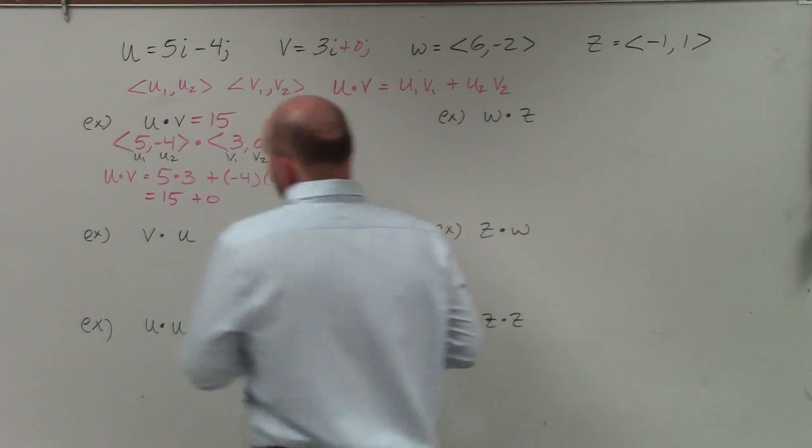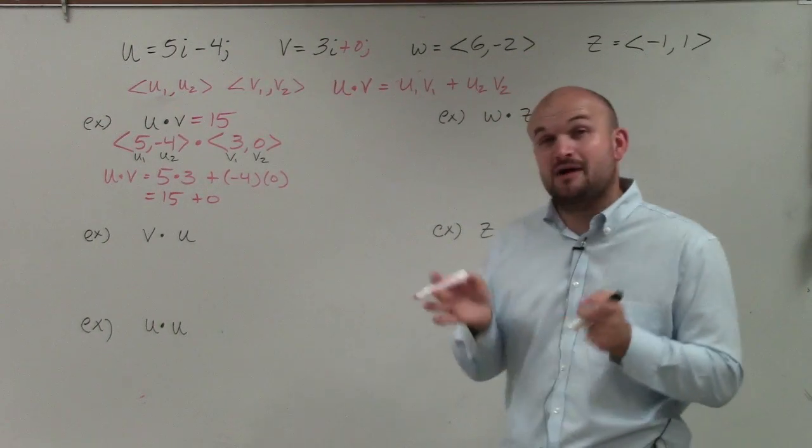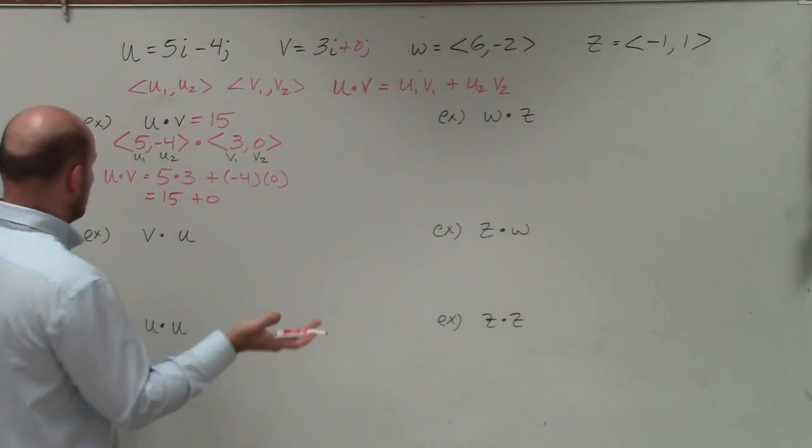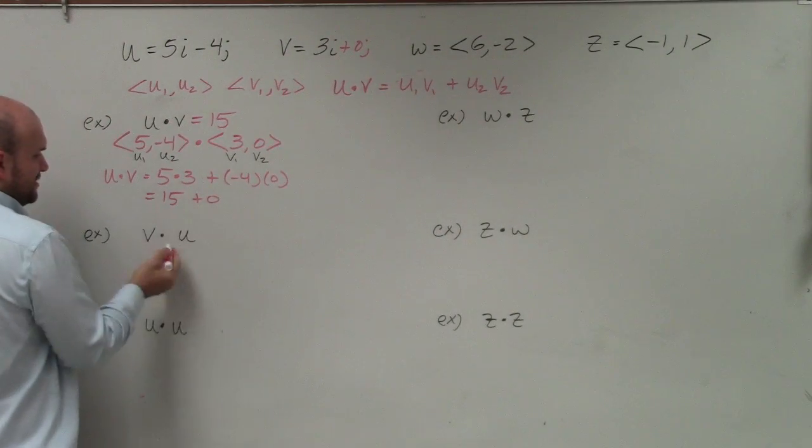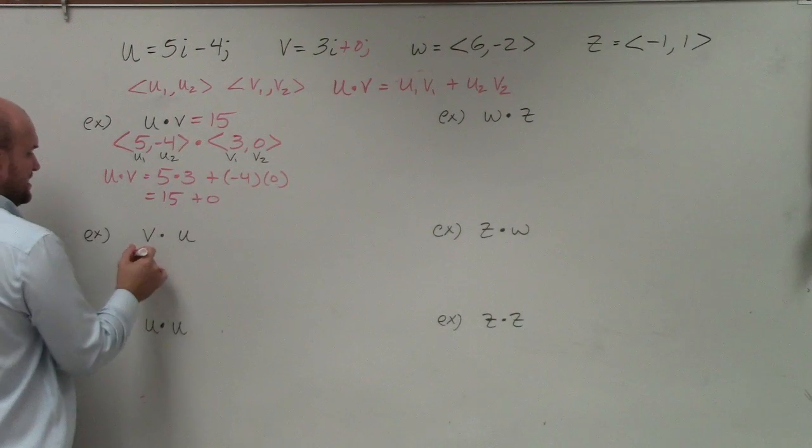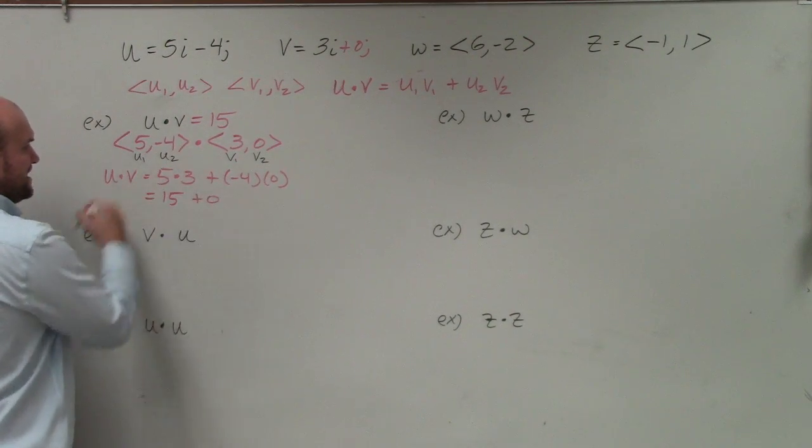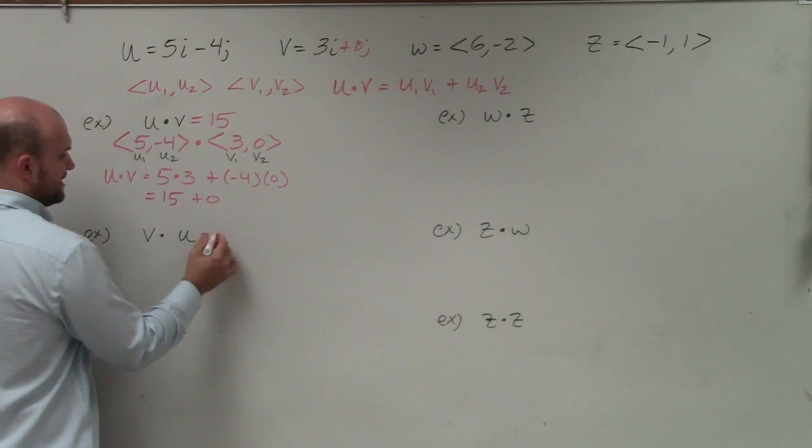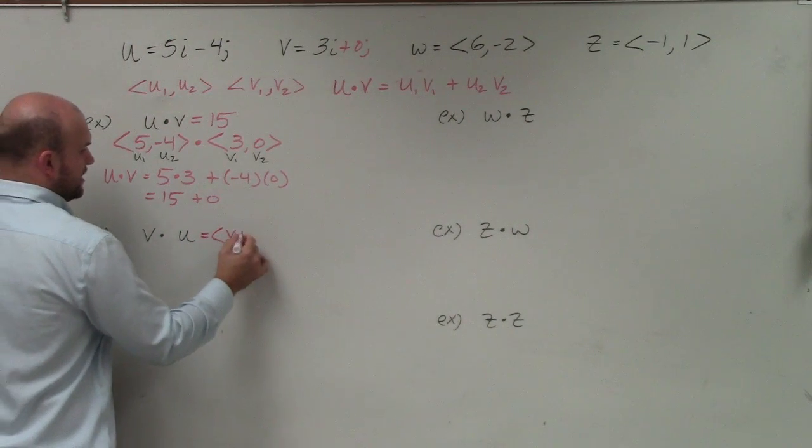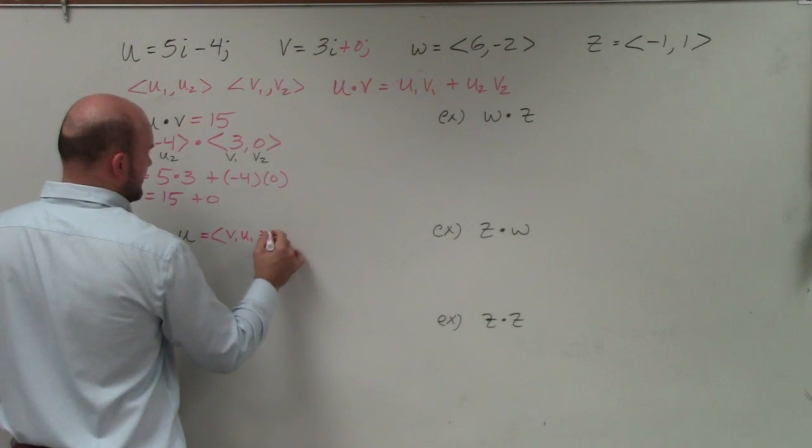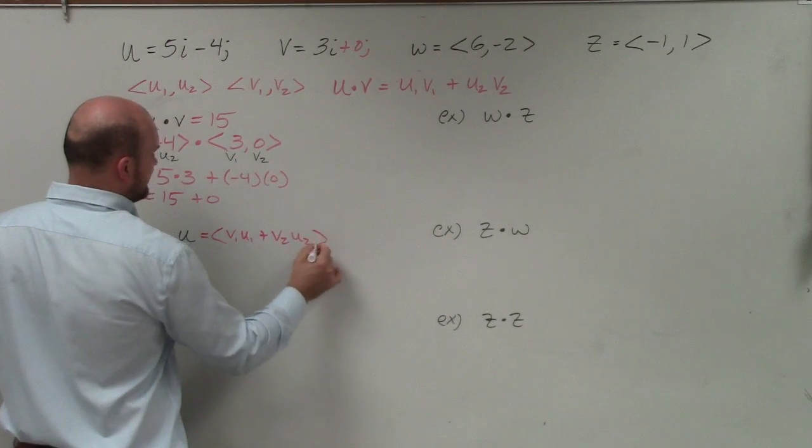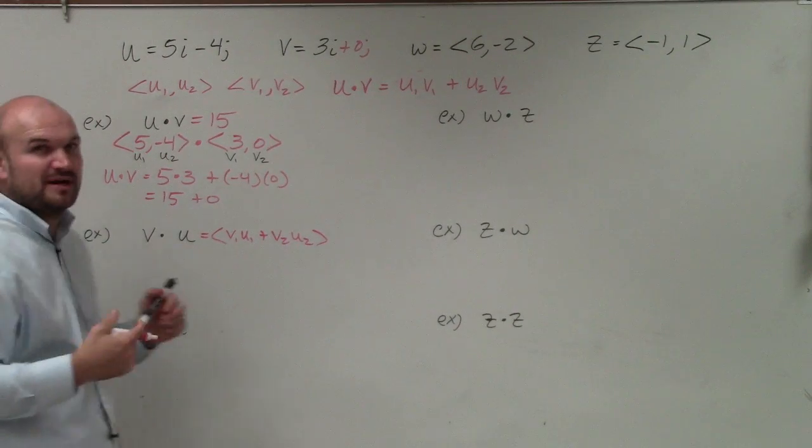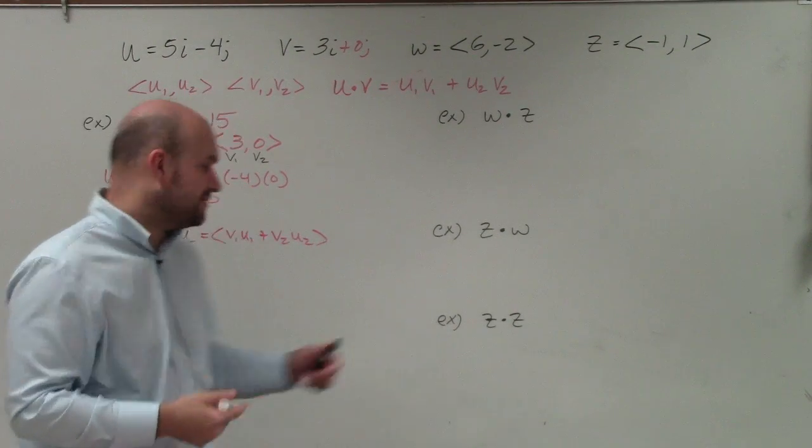Over here we can see that we're doing v dot u. So now I'm basically just swapping everything around. And again, that's really not going to change the formula. You could still think of this as the first vector or you could still keep them as v1, v2. But basically what you can see here is now you could break this up into v1 times u1 plus v2 times u2. Same kind of basically idea because it doesn't matter if you multiply the number 3 times 4 or 4 times 3 in reality.